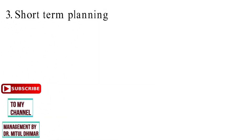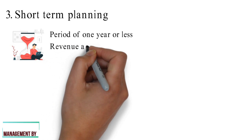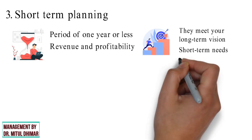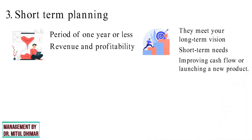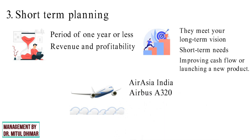Short-term planning in business generally focuses on a period of 1 year or less, especially in reference to revenue and profitability. Whatever your short-term goals may be, make sure they meet your long-term vision. Short-term planning focuses on short-term needs such as improving cash flow or launching a new product. For example, budget carrier AirAsia India planned to add 3 more Airbus A320neo planes by June 2021 within 1 year as part of its fleet and network expansion.